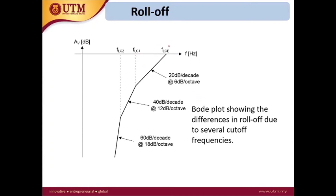This Bode plot shows the roll-off. In the previous example, we had three capacitors: two coupling capacitors and one bypass capacitor. The bypass capacitor's cutoff frequency becomes the low cutoff frequency because it is the highest value. After that, the rate of reduction of the gain is 20 dB per decade or minus 6 dB per octave.